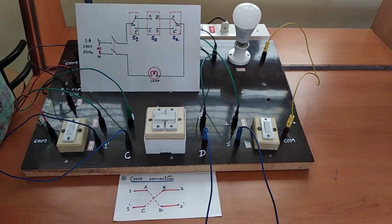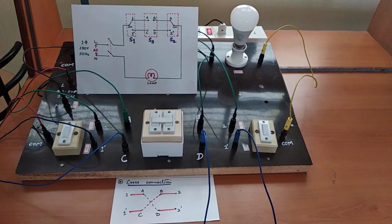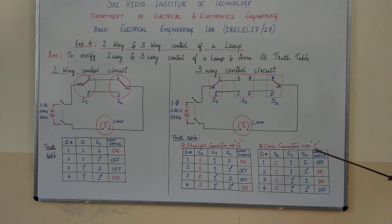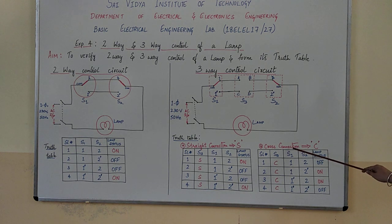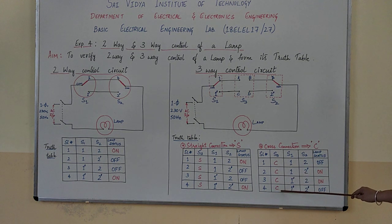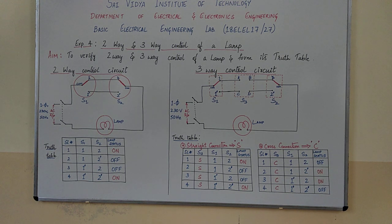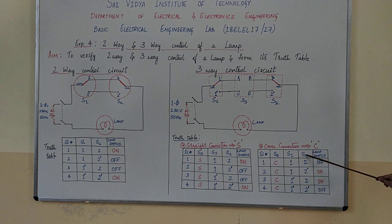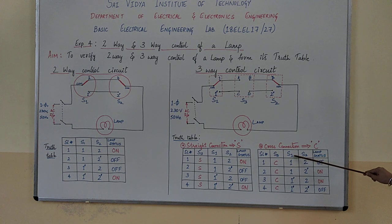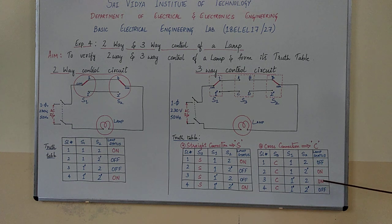Now let us form the truth table and compare results. Forming the truth table for the cross connection position of switch S3 — since S3 is in cross connection, it is indicated as C. The lamp was on for two cases: when switch S1 was at 1 and switch S2 was at 2 dash, the lamp glowed; and when S1 was at 1 dash and S2 was at 2, the lamp again glowed.